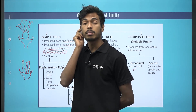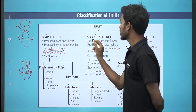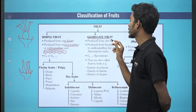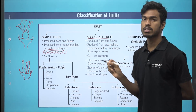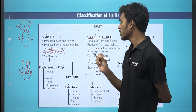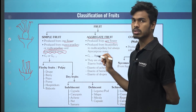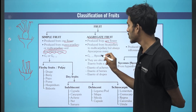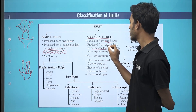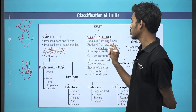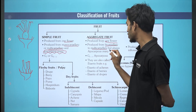This is a simple fruit. This is an aggregate fruit. This is an aggregate fruit. This includes multicarpellary ovaries.